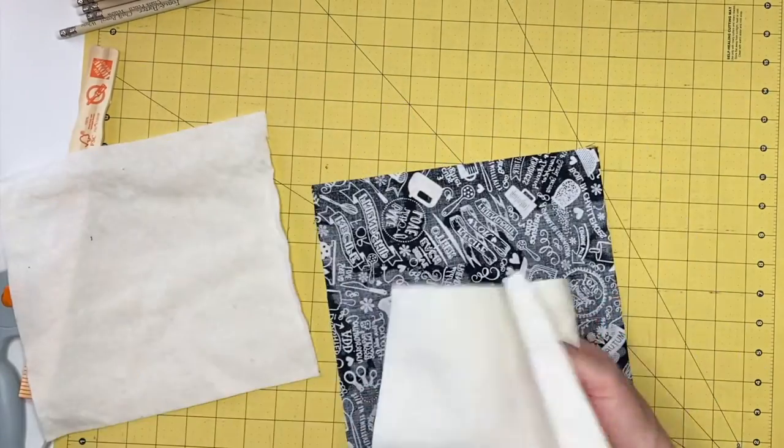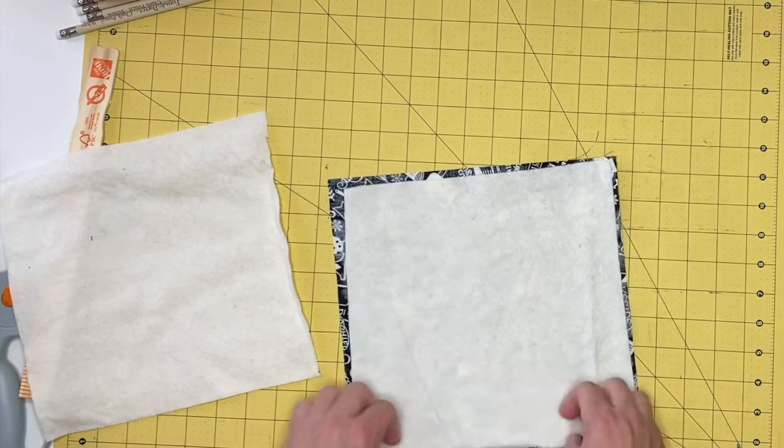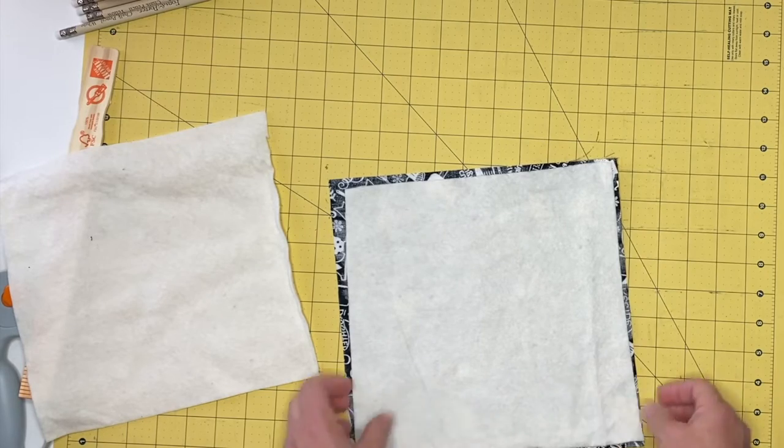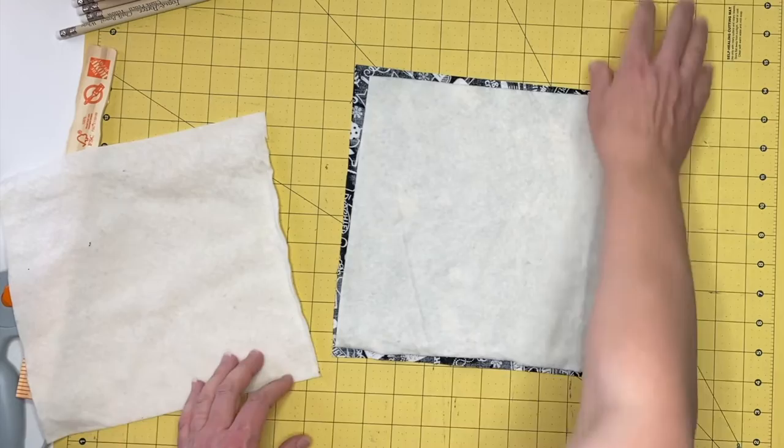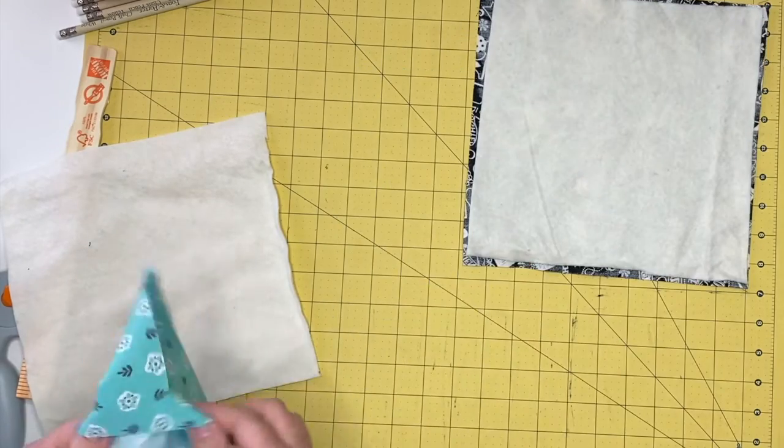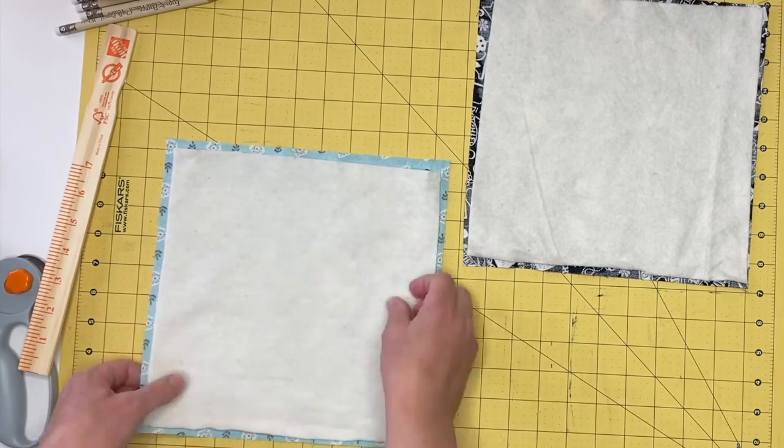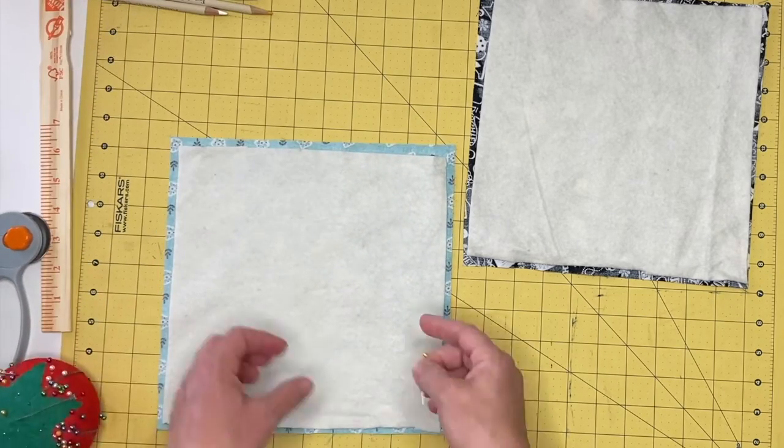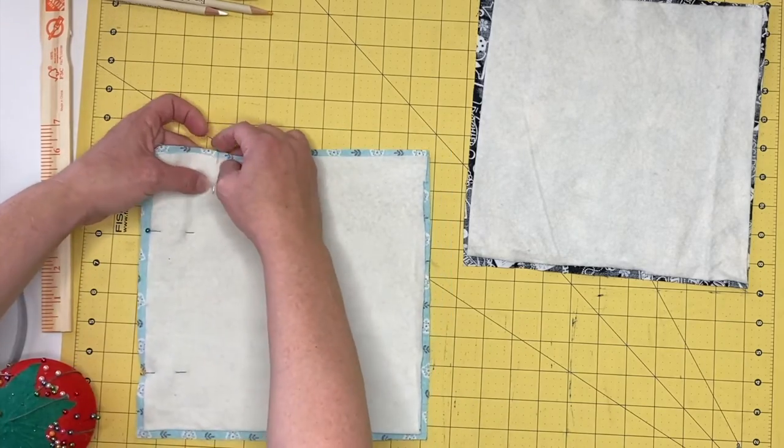Lay one cotton square face down. Place one batting square on top of the cotton square. Be sure to center it. Pin twice on each edge to hold the batting square in place.